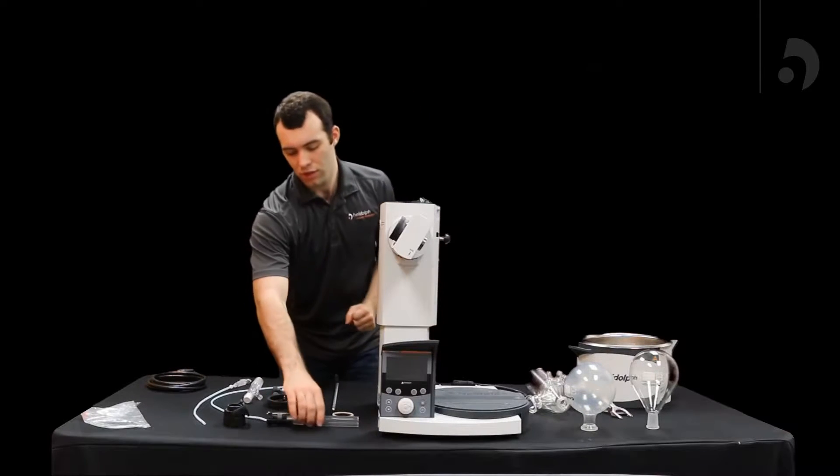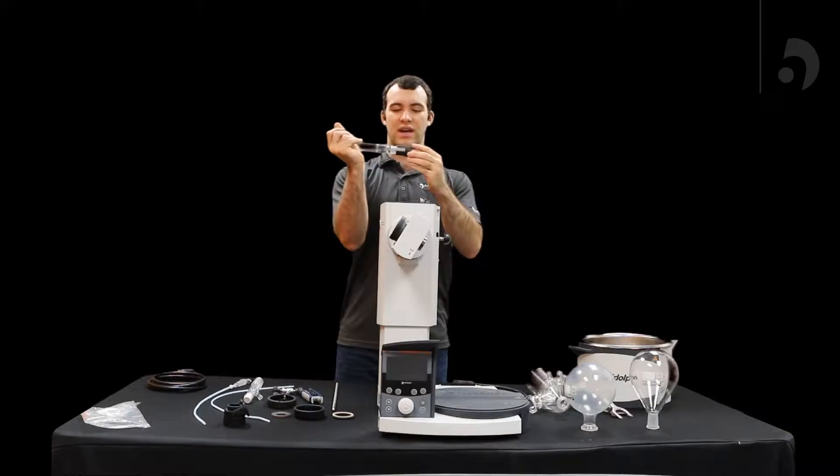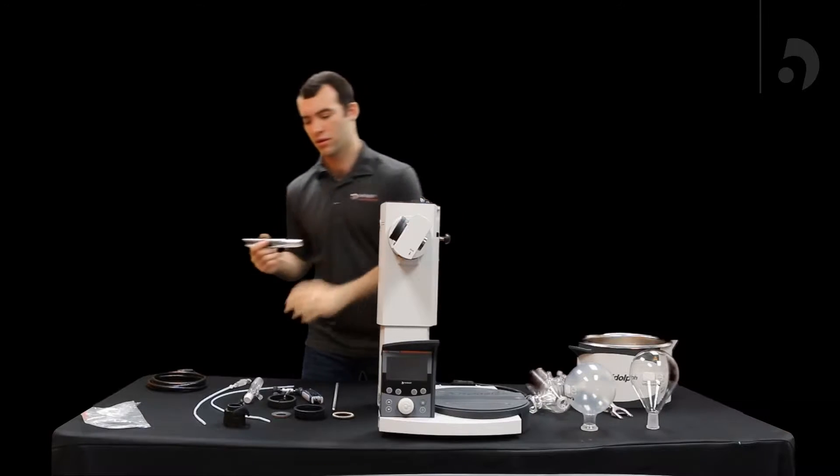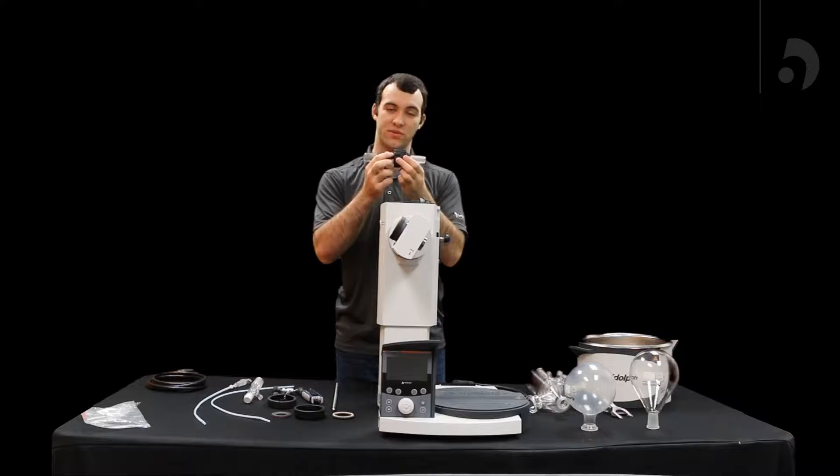After that, you're going to want to take your vapor tube and your vapor tube sleeve, slide that on over, pull it tight until you hear the click, and then grab your swing clamp. You can just slide that right in the swing clamp.